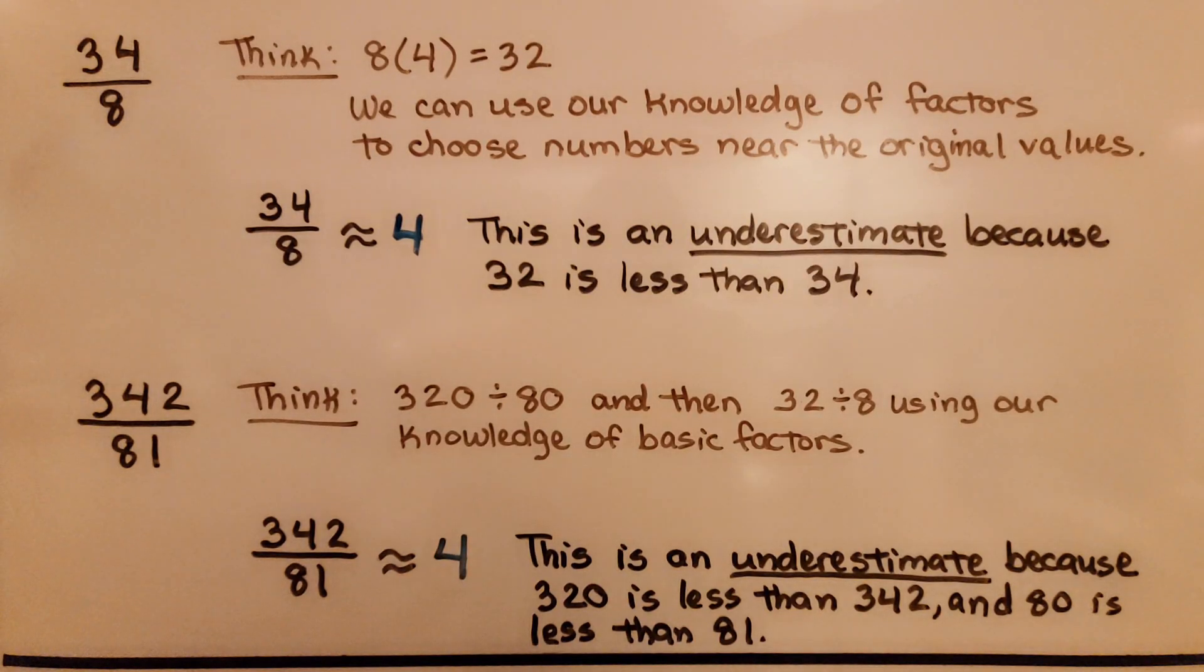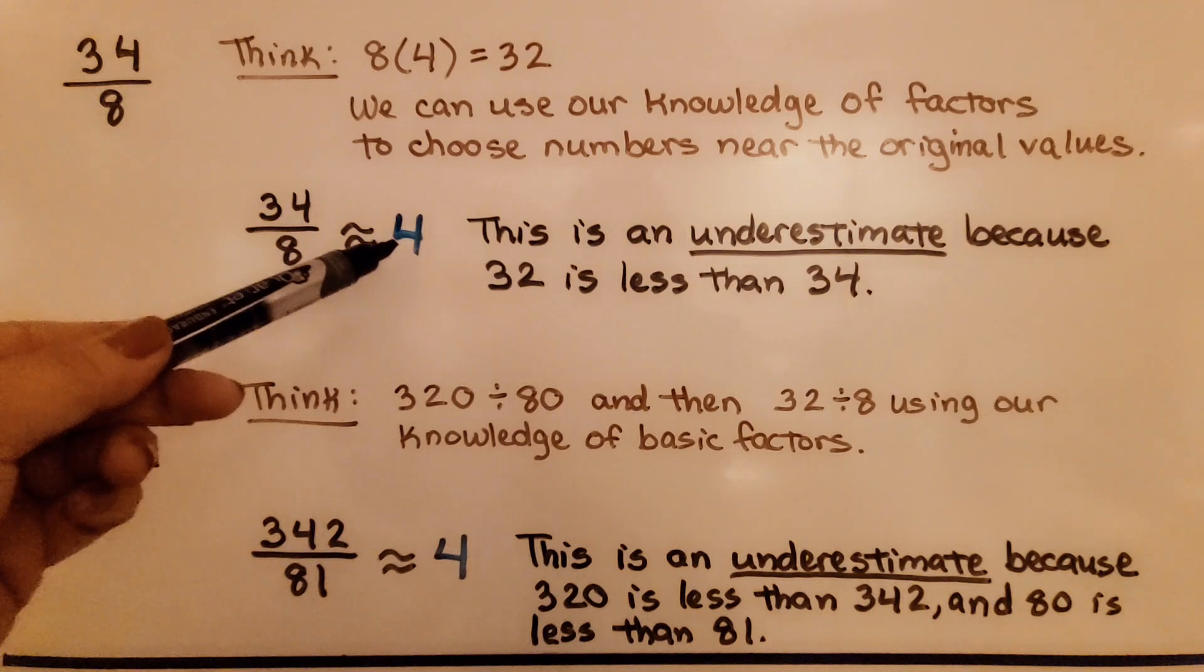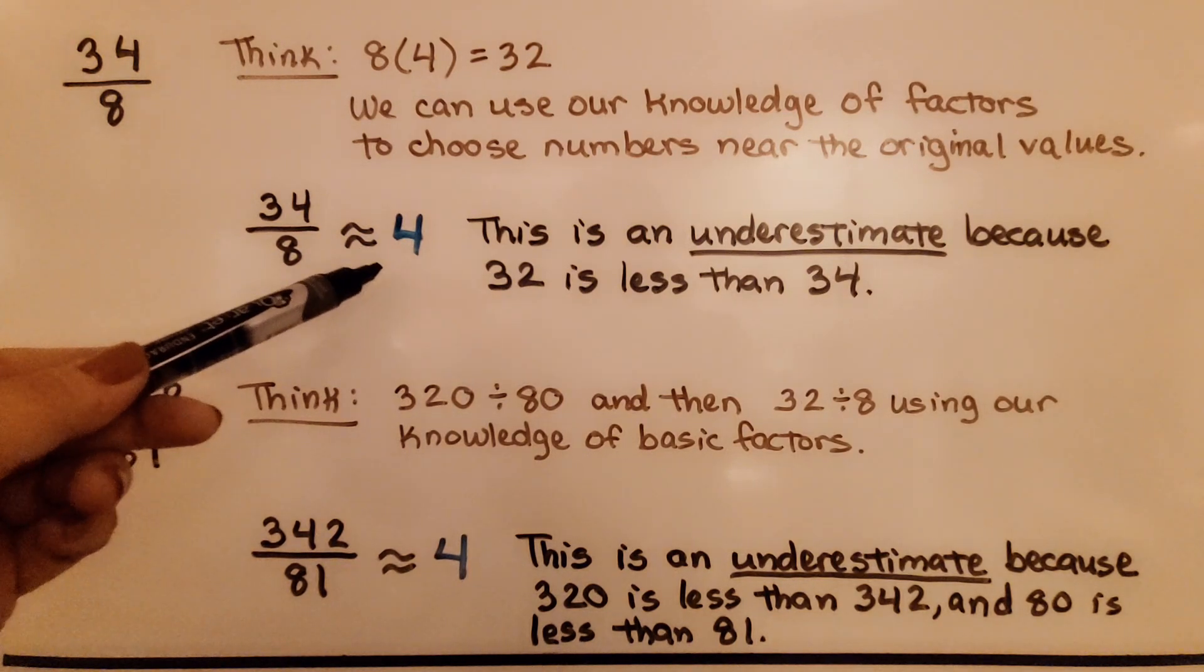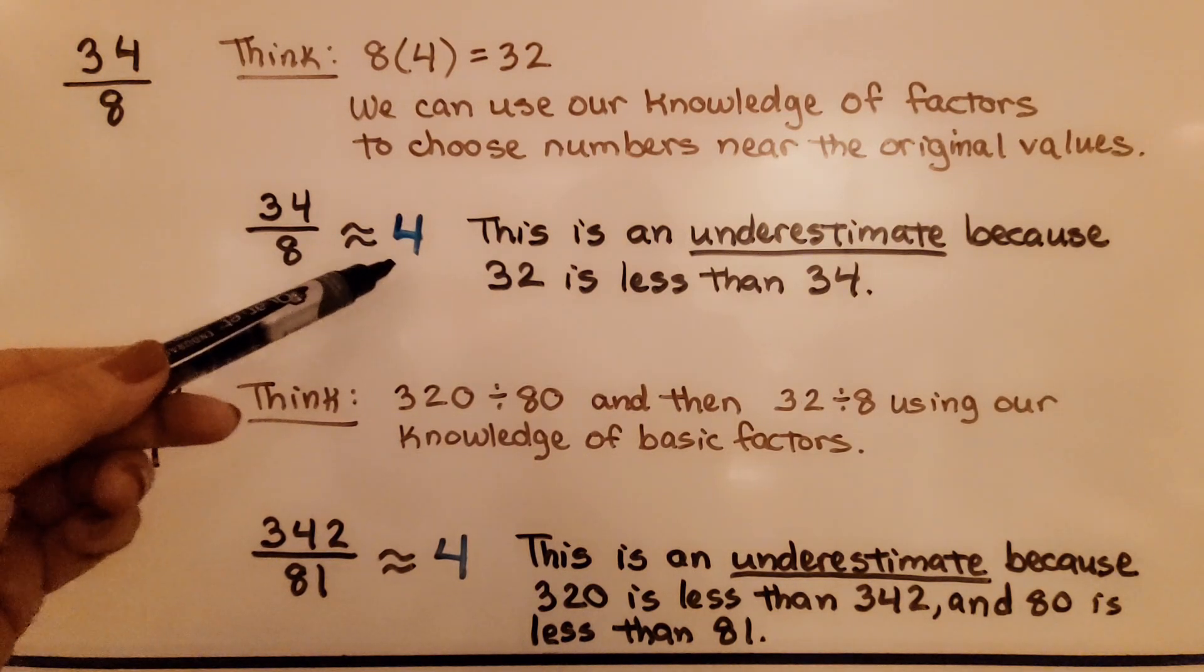Here we have 34 divided by 8. We think, well, 8 times 4 is 32. That's pretty close. We can use our knowledge of factors to choose numbers near the original values. We can say 34 divided by 8 is approximately 4. This is an underestimate because 32 is less than 34.